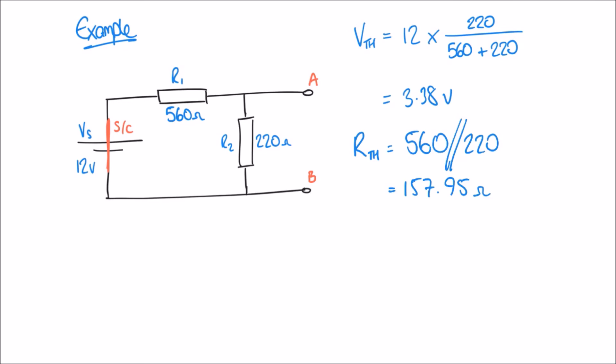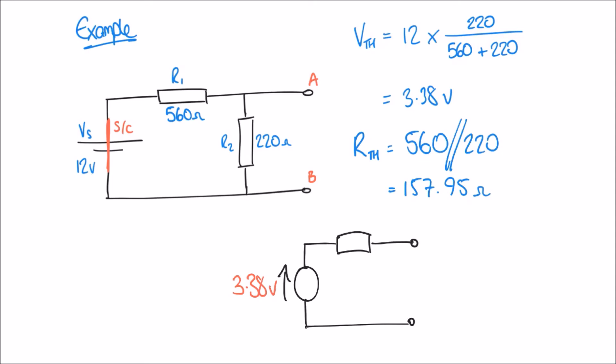Finally, step three asks us to draw our Thevenin equivalent circuit — a DC power supply, one voltage source, connected in series to one resistor, with our two terminals. We can mark on the values: the Thevenin voltage is 3.38 volts, and the Thevenin resistance is 157.95 ohms. What the theorem is saying is that these two circuits are completely equivalent — I could measure voltage, current, or resistance across those output terminals and get the same results on the original circuit as on the new one. The two are totally equivalent, but one is far simpler than the other.